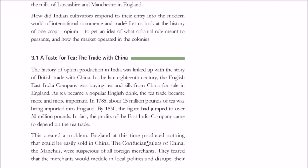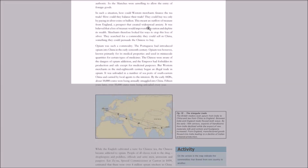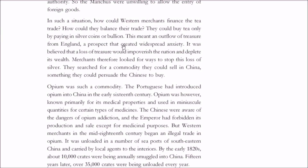There was a problem: the Confucian rulers of China — the Manchus — were suspicious of foreign entry and did not want to open their market to foreign goods. So how could the East India Company obtain tea? There had to be a balance in trade — if you take tea, you have to give something. They began paying the Chinese in silver coins or bullion.